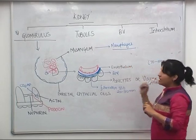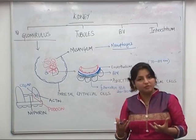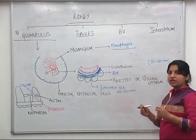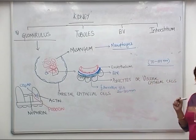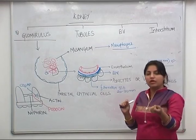The endothelium of the kidney is very different from endothelium at other places because it is highly fenestrated. The size of the fenestration is 7200 nanometers. This size is just enough for the smallest protein - albumin - to pass through. So this is the fenestrated endothelium of the kidney.